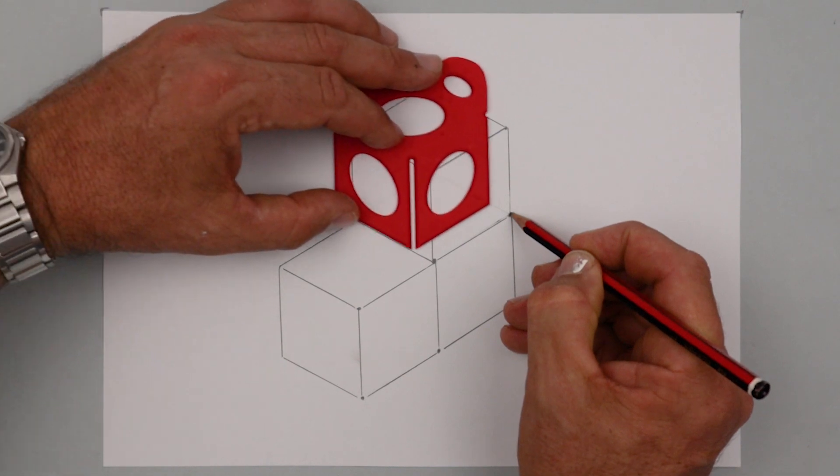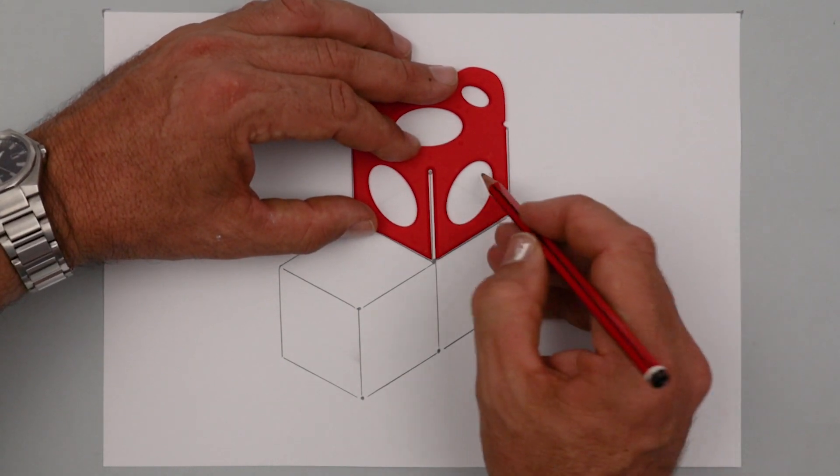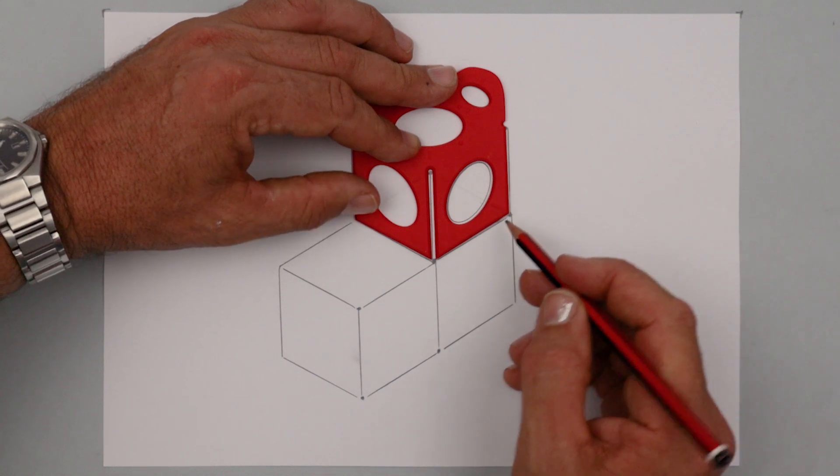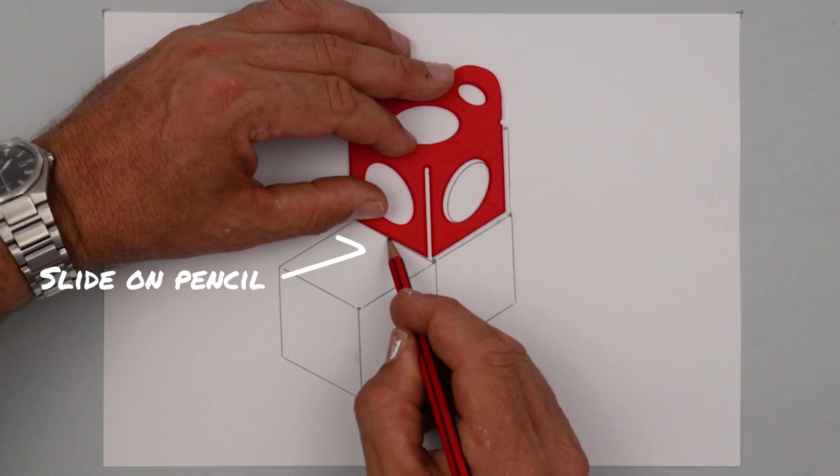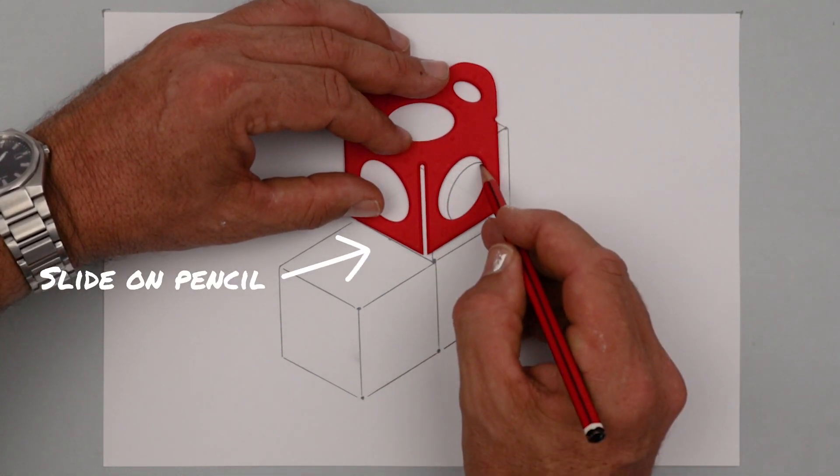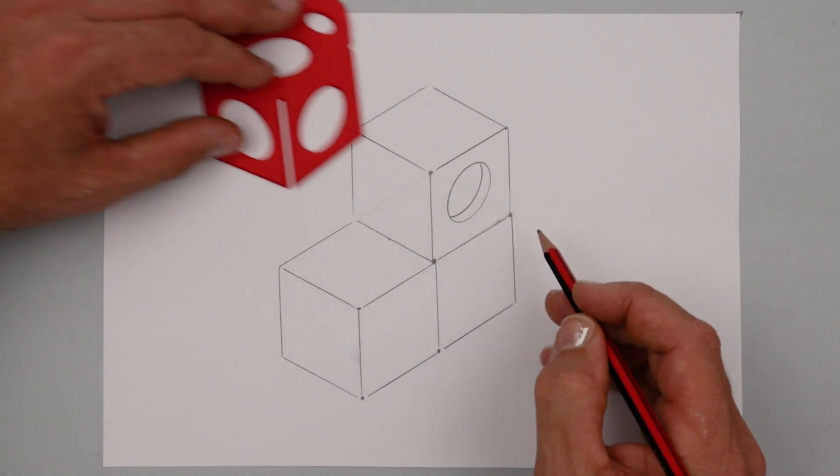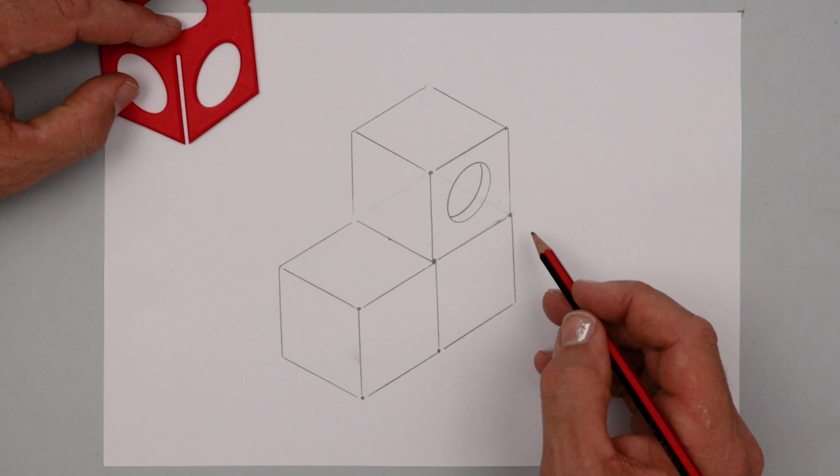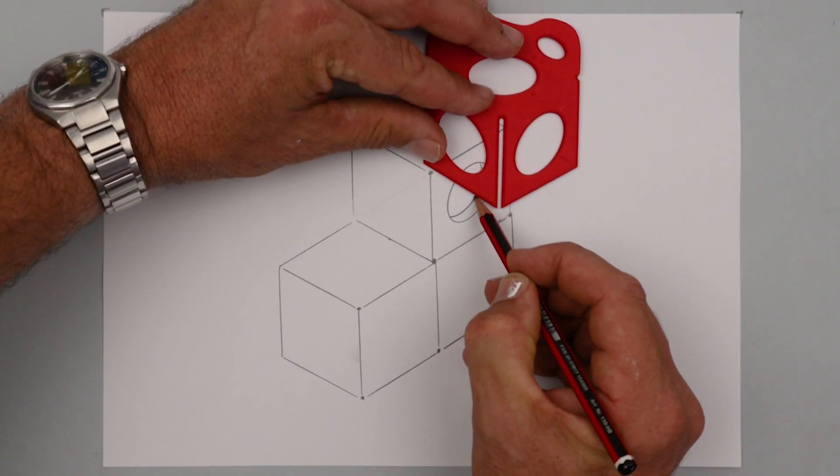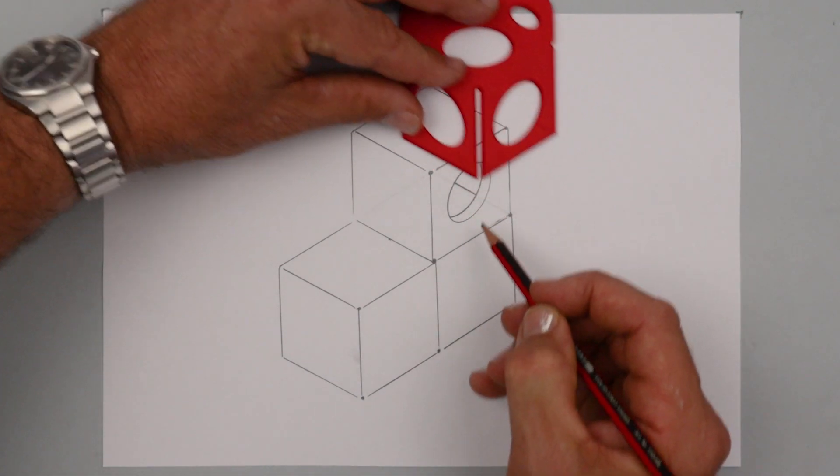Now let's get fancy and hollow one of the cubes out. Line up the corner just as shown and trace in that full oval or what we call an ellipse. Slide it on the pencil and then draw in just part of the ellipse. Stop at the line, top and bottom. Can you imagine looking inside? You'd see a corner right there.